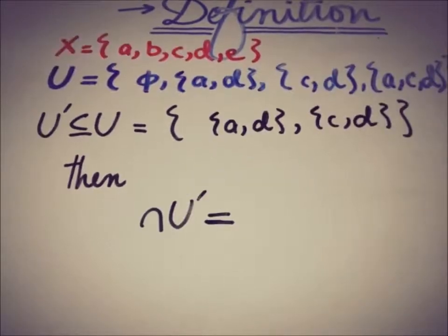So if we have a topological space x with elements a, b, c, d, e, I am taking a finite topological space right now in order to avoid complexity, just to understand the concept of the finite intersection property.